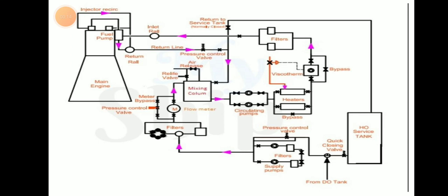Here we can see the main engine, the fuel pump, and fuel station. On the right side there is heavy fuel oil service tank, then nearby quick closing valve. From the diesel oil tank there is a three-way valve, pressure control valve, supply valve filters, then flow meter, pressure control valve, mixing column, circulating pump, then filters, pressure control valve, and return line.